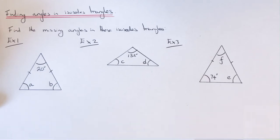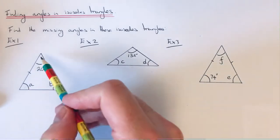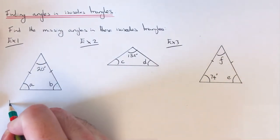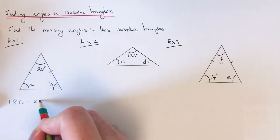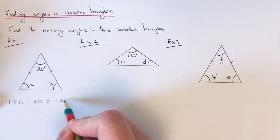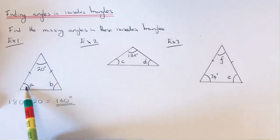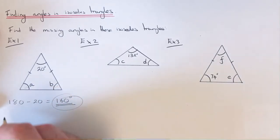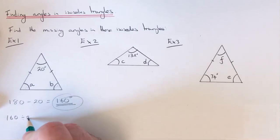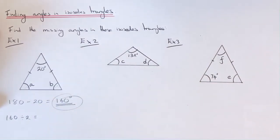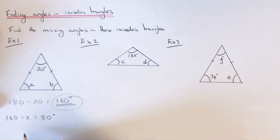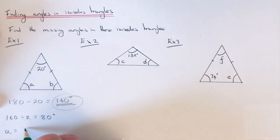To do this, you need to know that angles in a triangle add up to 180. So the first thing I'm going to do is subtract the 20 away from 180, which gives us 160 degrees. Now these two angles at the bottom are both the same, so what we need to do is half this answer or divide it by 2. Half of 160 is 80 degrees. So angle A would be 80 degrees and so will angle B.